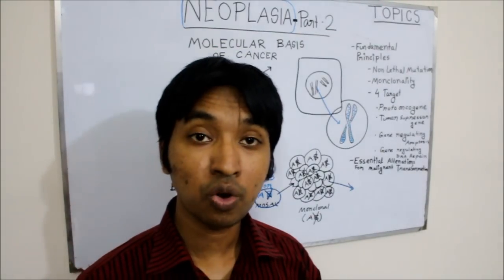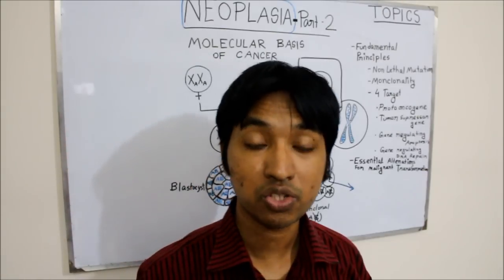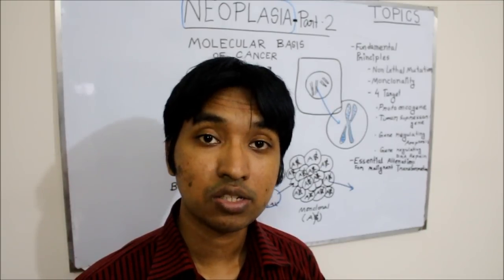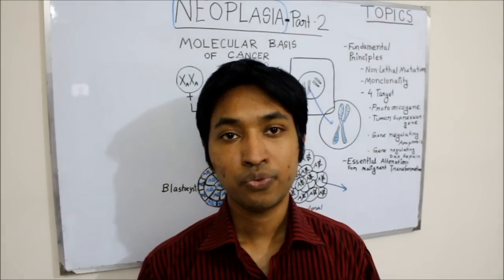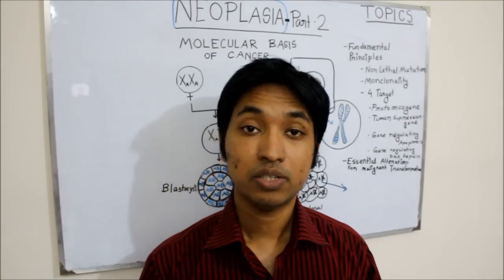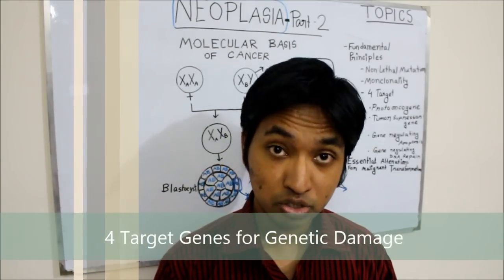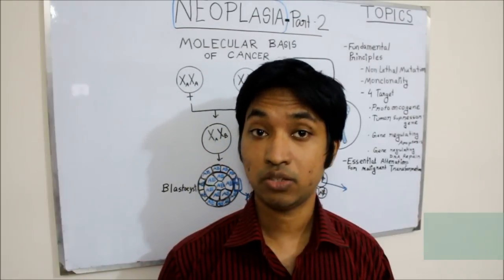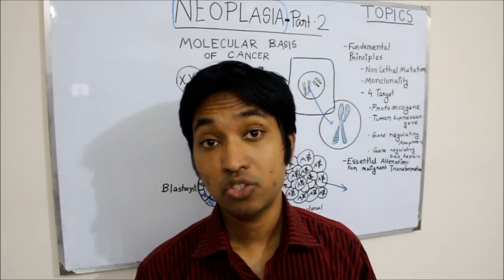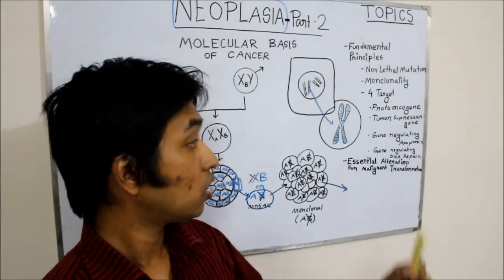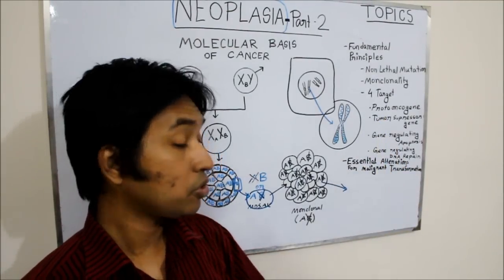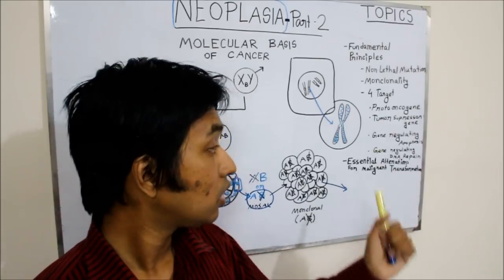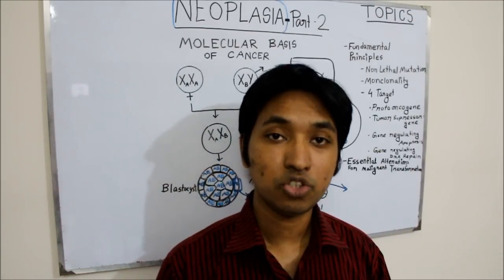Now we will move on to the last fundamental principle — a discussion about targets of cancer. There are four classes of regulatory genes that are the principal target of genetic damage. When these genes are mutated there is a chance of development of cancer in the long run. These genes are: proto-oncogene, tumor suppressor gene, genes that regulate apoptosis, and genes that regulate DNA repair.